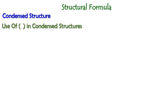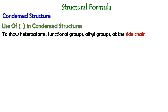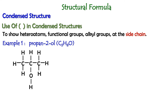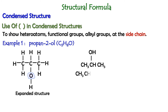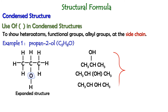In condensed structure, we need to use bracket symbols to show heteroatoms, functional groups, or alkyl groups at the side chain. For example, if we have propan-2-ol, this is the expanded structure of the molecule. If we convert it into condensed structure, we can write the molecule like this, or like this with the bracket around the OH group, or like this — all of these represent the condensed structure of the molecule.